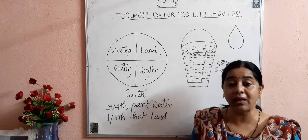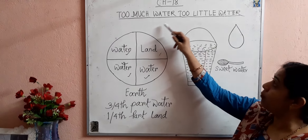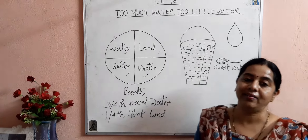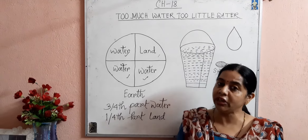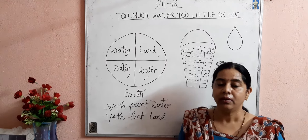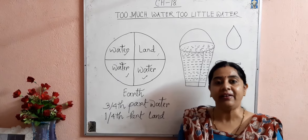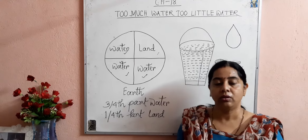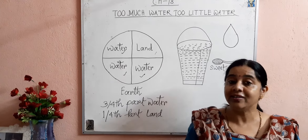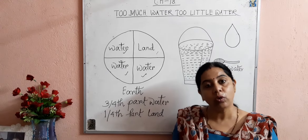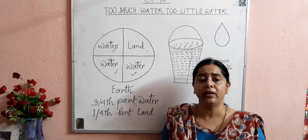That little water is for plants, animals, and human beings. That's why it is called 'too much water, too little water.' The water that all living beings need for daily use is sweet water, which is present in a limited amount on the earth's surface — in ponds, rivers, lakes, streams, wells, and underground water. Their amount is limited on our earth's surface.